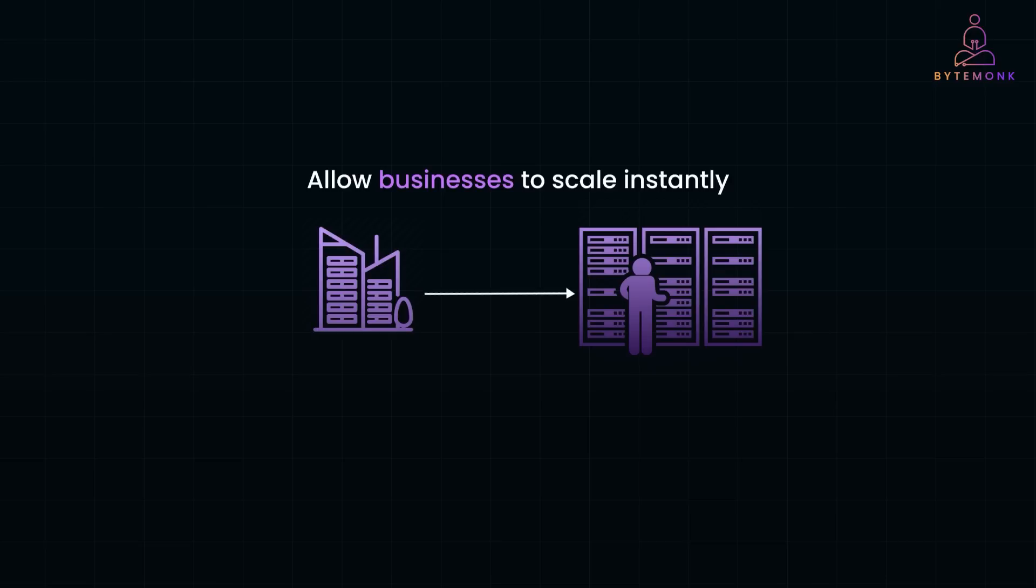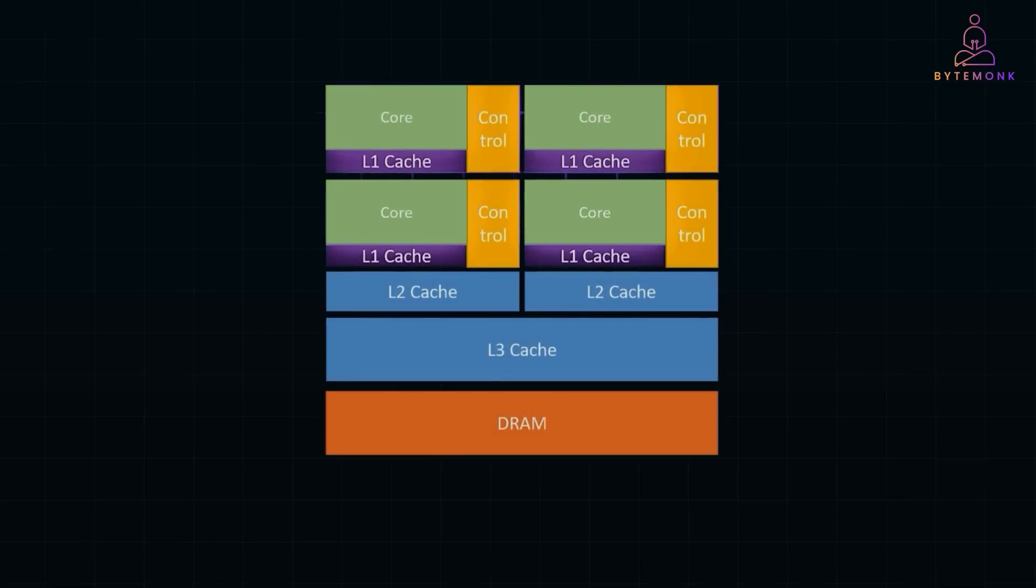Now, in the early days of data centers, CPUs were the workhorses. CPUs are general purpose processors designed to handle a wide variety of tasks like running operating systems, managing databases, and serving web pages. They are great for tasks that require sequential processing, where one task follows another. But here's the thing. CPUs are not optimized for the kind of parallel processing that AI workloads demand. Training a machine learning model, for example, involves performing millions or even billions of calculations simultaneously. CPUs can do this, but they are slow and inefficient compared to GPUs.